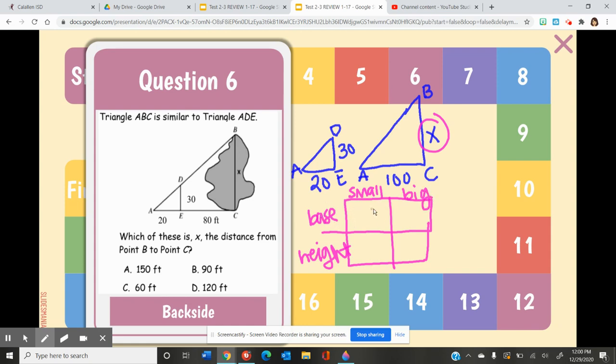So I want to look at my small base. I'm going to go to my small shape, and my base here is 20. Then I want to look at my small height. So I'm looking at the small triangle, and its height is 30. Okay, so now I want to look at my big base, and my big base is 100. And what I'm looking for is my big height, which is X.